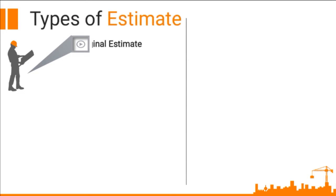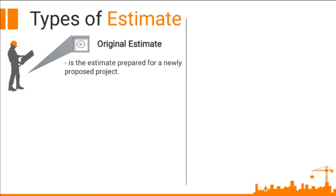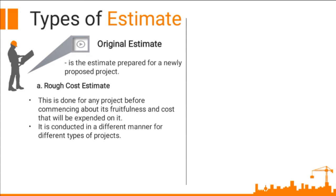Types of estimate. Original estimate is the estimate prepared for a newly proposed project, and it has two ways: the rough cost estimate and the detailed estimate. The rough cost estimate is done for any project before commencing, about its fruitfulness and the cost that will be expended on it. Sometimes the rough cost estimate can also be obtained by comparing cost expended over former project experiments and the undergoing proposed project. Under this also falls contingencies — these are additional charges that have to be made on an urgent basis during a project and cannot be predicted.